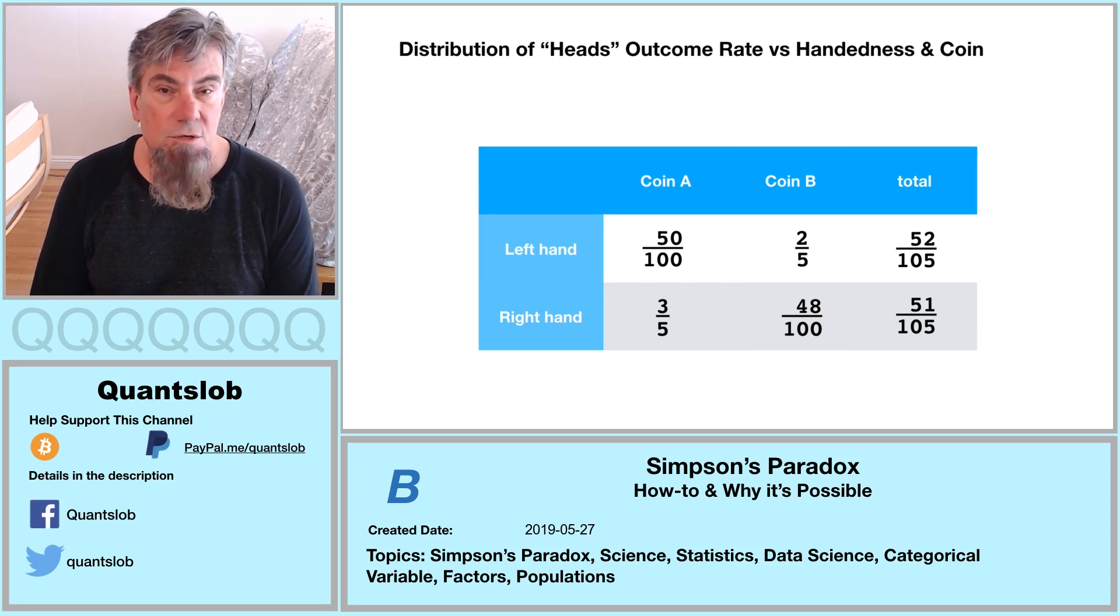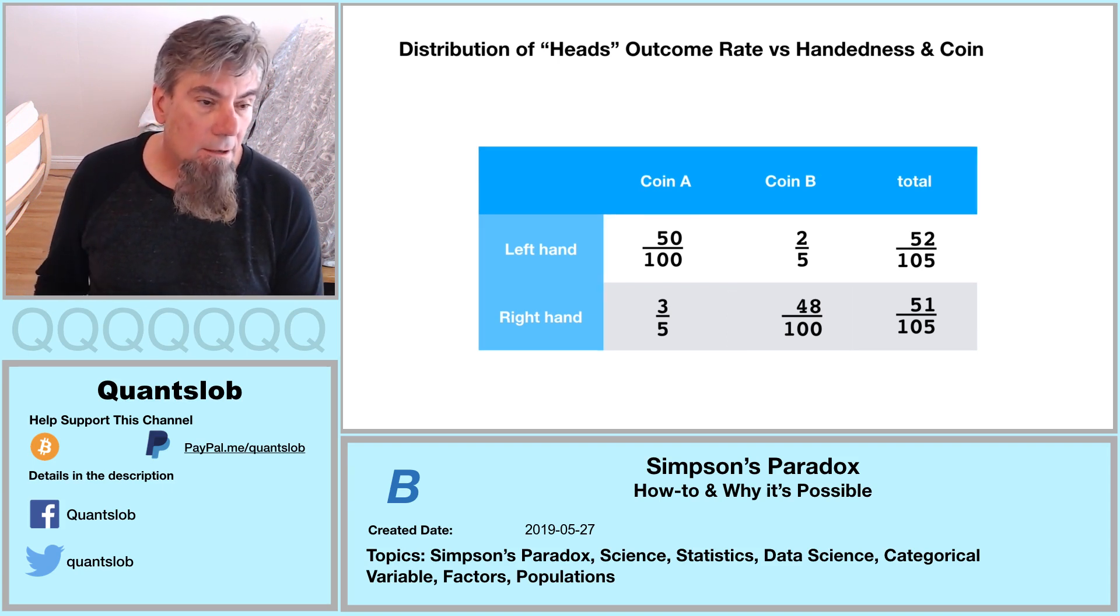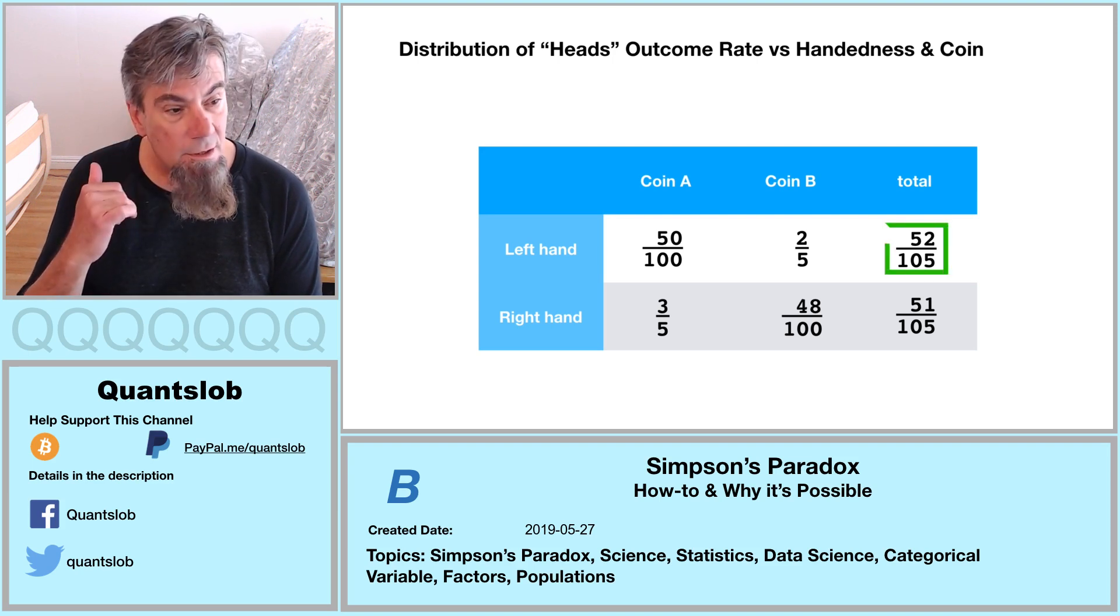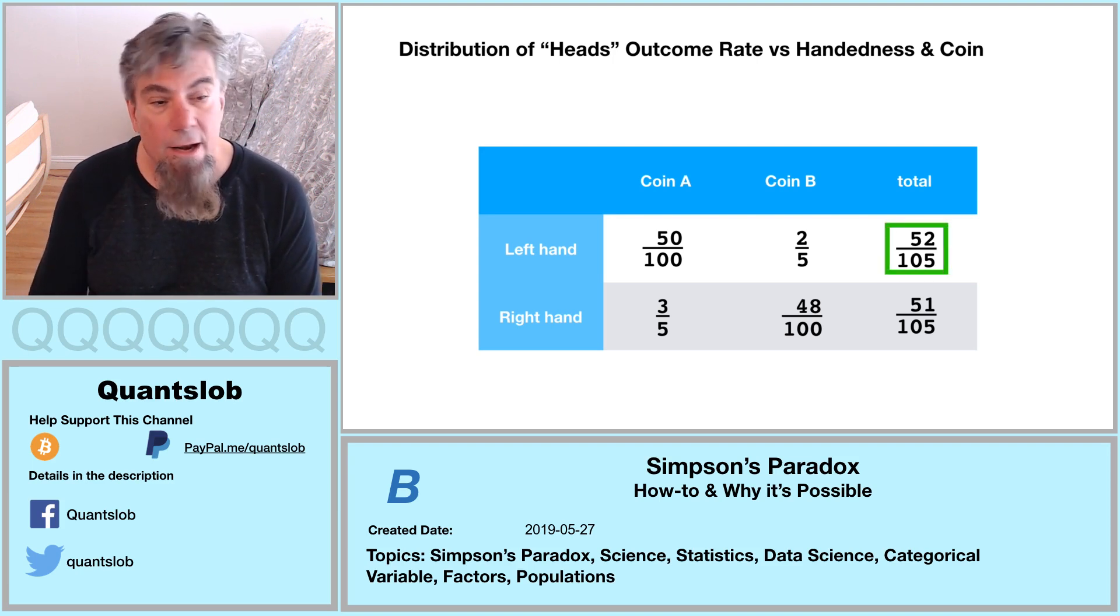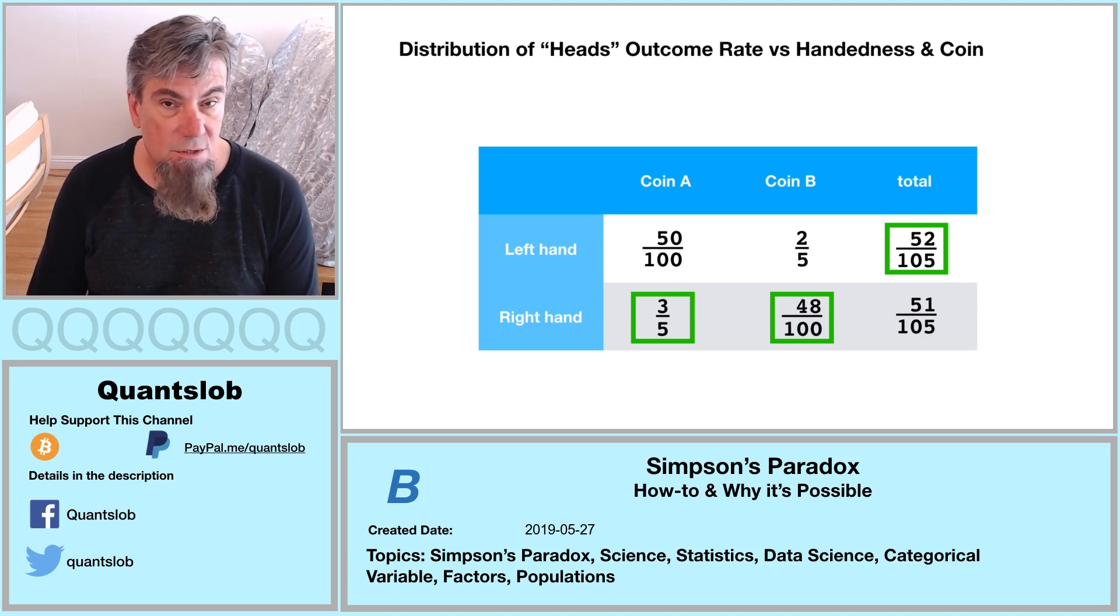And so we arrive at a situation where we can see here that left handed flips yielded a higher ratio of heads than right handed flips. 52 over 105 is greater than 51 over 105. However, for both coin A and coin B, the opposite is true. For both coin A and coin B, right hand flips, not left hand flips, produced a higher ratio of heads. Three fifths is greater than 50 over 100, and 48 one hundredths is greater than two fifths.